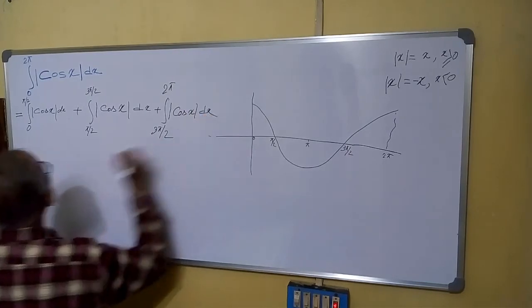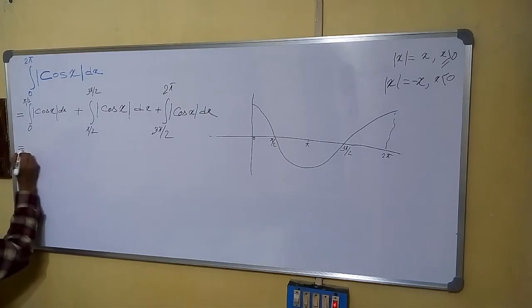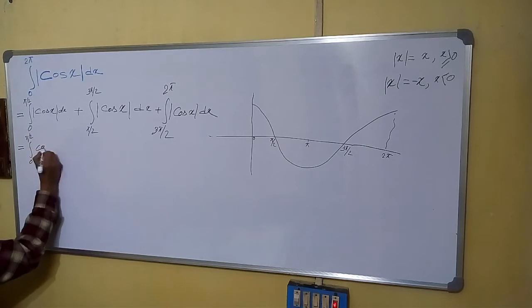As I said, you have to remember, for this part it is positive. So, we will remove mod and write 0 to pi by 2, cos x dx.